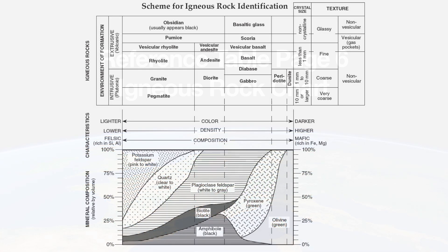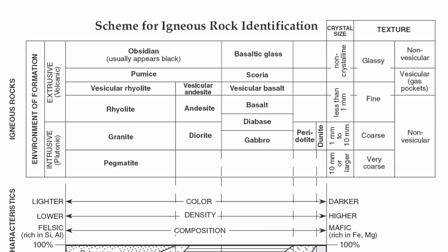Now, your igneous rock chart has a couple different components in terms of how to read this chart. There's a lot of information that you need to be able to grab out of this. Let's start out with the very top of this chart first. Probably the most important section is going to be your texture. Texture is basically going to be crystal size, and that's how all your igneous rocks in this chart are going to be organized.